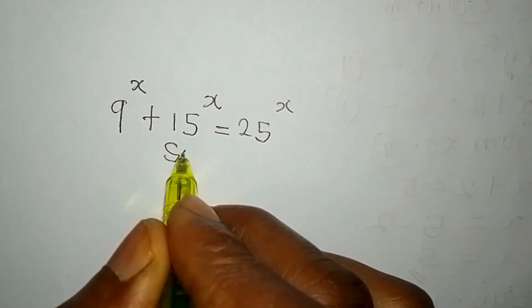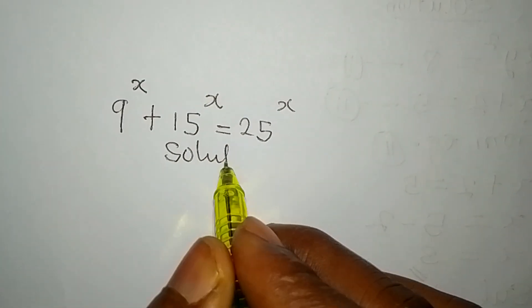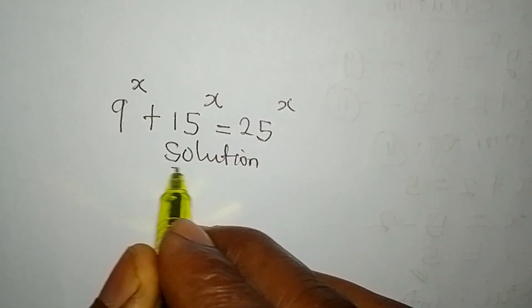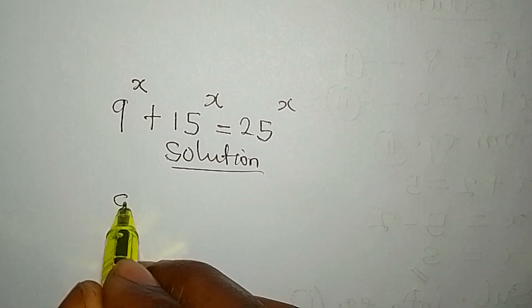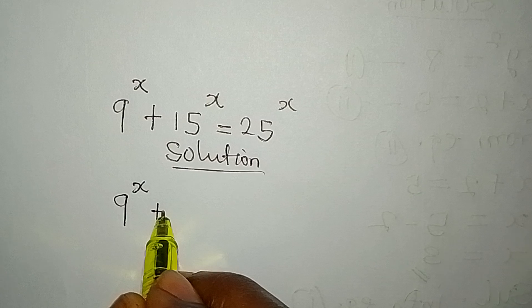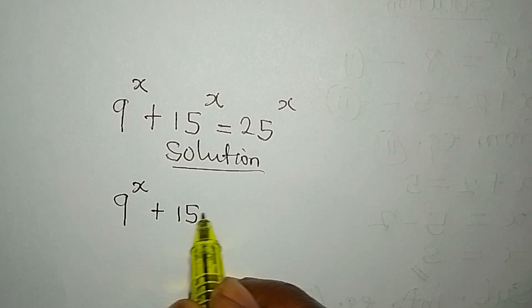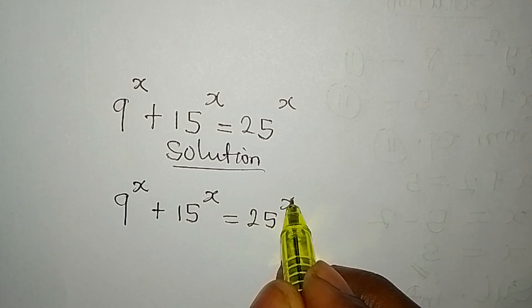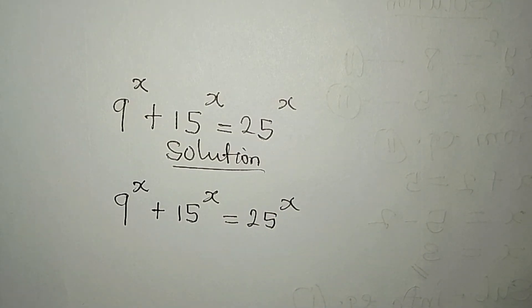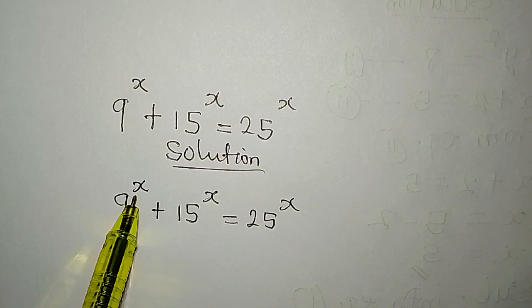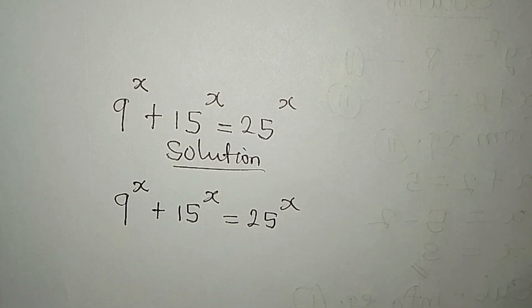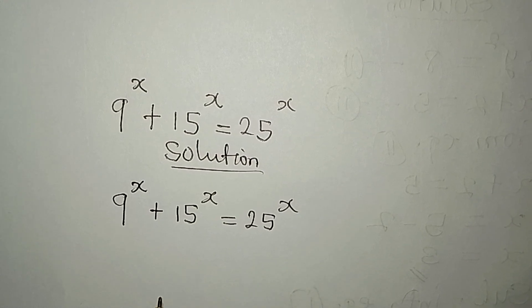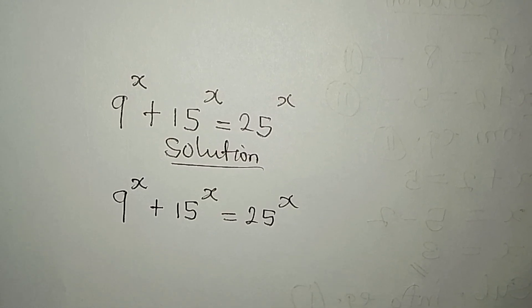Hello everyone, let's provide the solution to this problem. We have 9 to the power of x plus 15 to the power of x equals 25 to the power of x. Now we have power of x in three places. Since we are looking for x, we need to have power of x in one place before getting the solution. So what then do we do?